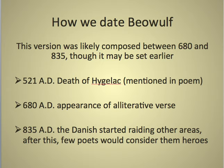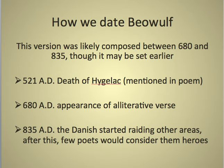The version we're reading was likely composed between 680 and 835 A.D., though it might be set a little earlier — the timeline is not quite certain, so we're only speculating. Some things that actually did occur: in 521 A.D., the death of Hygelac, who is mentioned in the poem. So this was a character that actually did live, and he is one of many names we are going to have to work through while reading Beowulf.